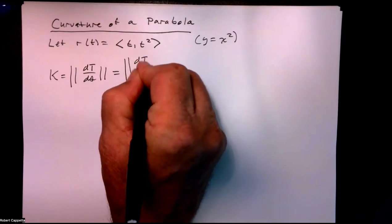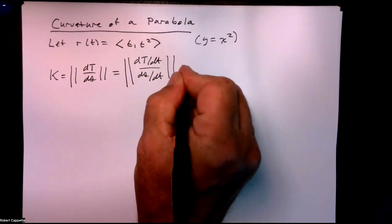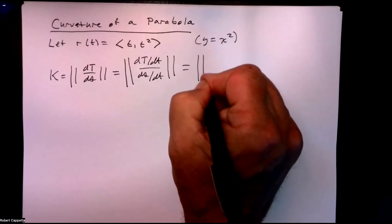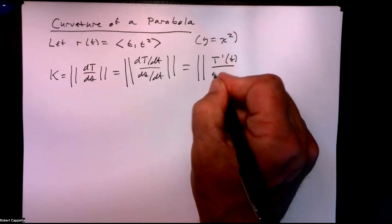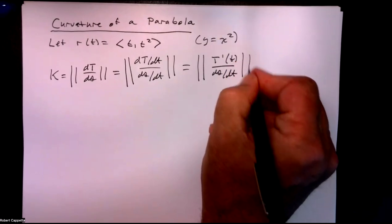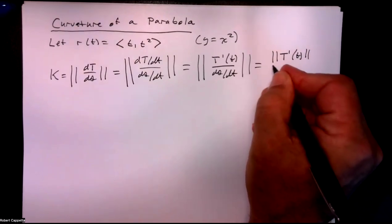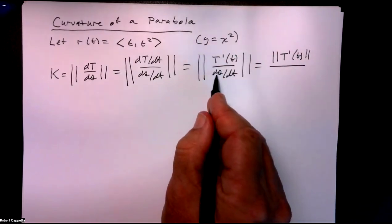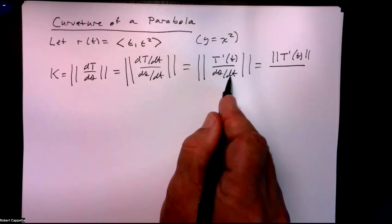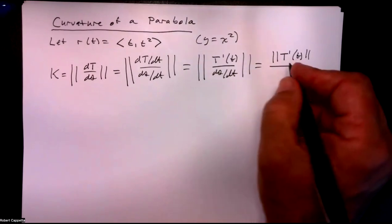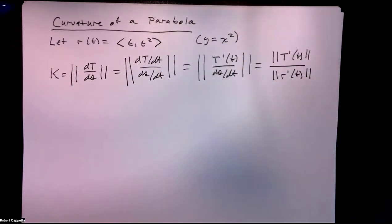We'll do it by writing dT/dt over ds/dt. Here dT/dt is the derivative of big T with respect to little t — that's T'(t) — over ds/dt, which is the magnitude of T'(t) over the rate of change of arc length. Remember s is arc length with respect to time, so distance traveled with respect to time — miles per hour — that's speed, or the magnitude of the velocity, magnitude of r'(t).